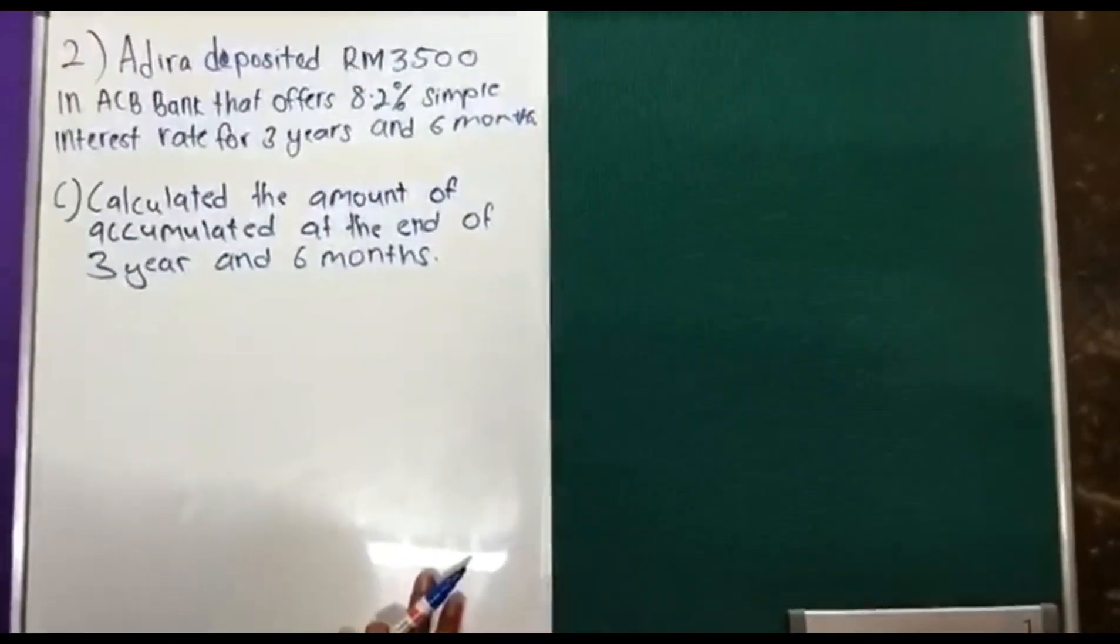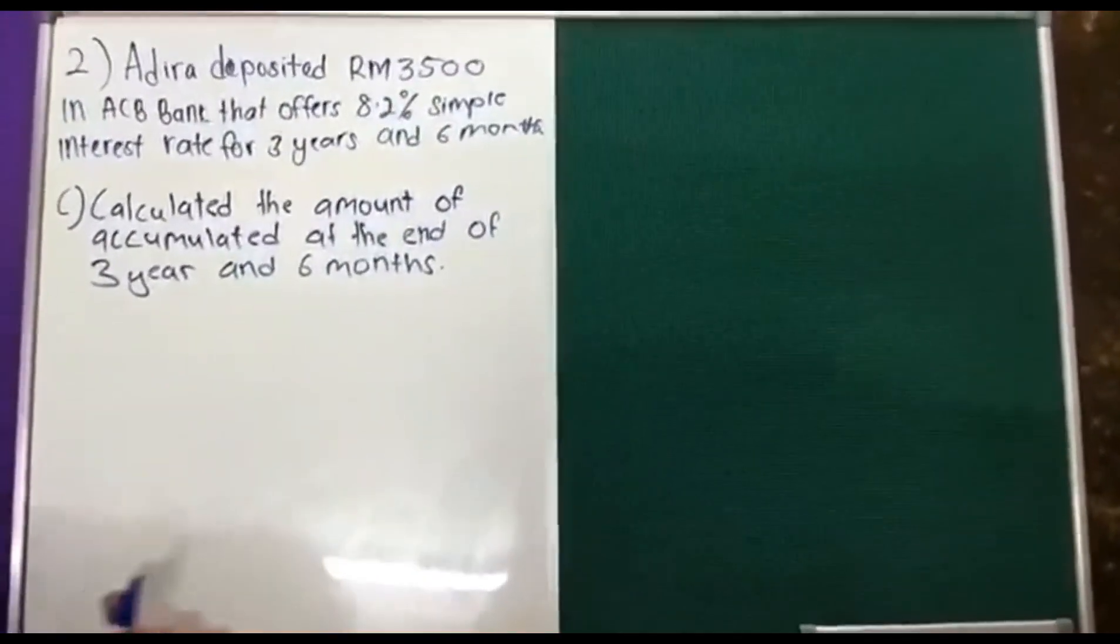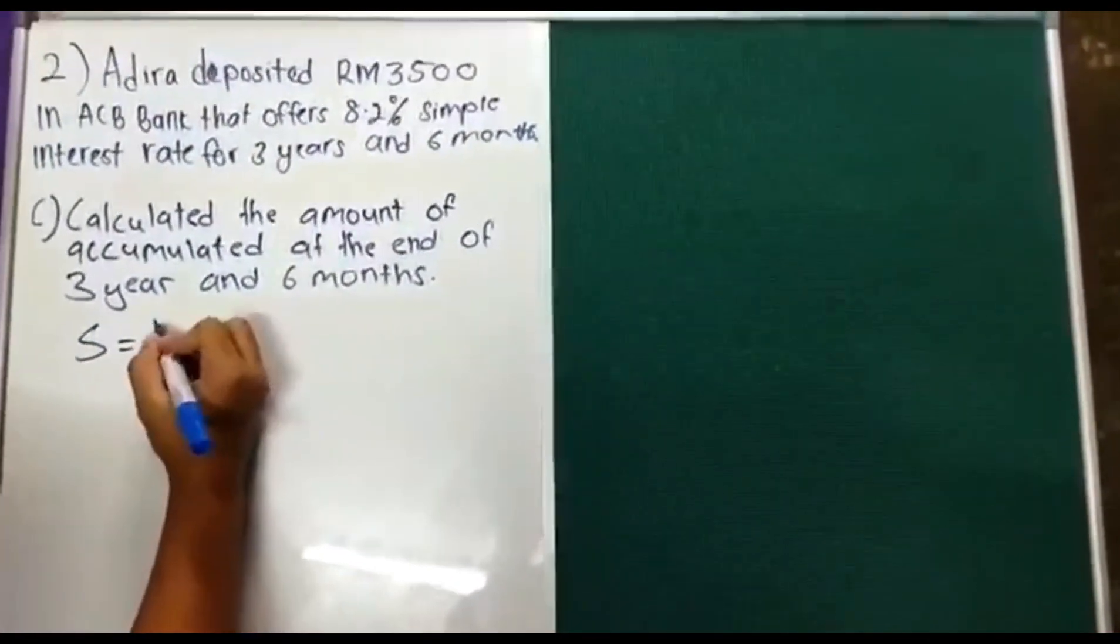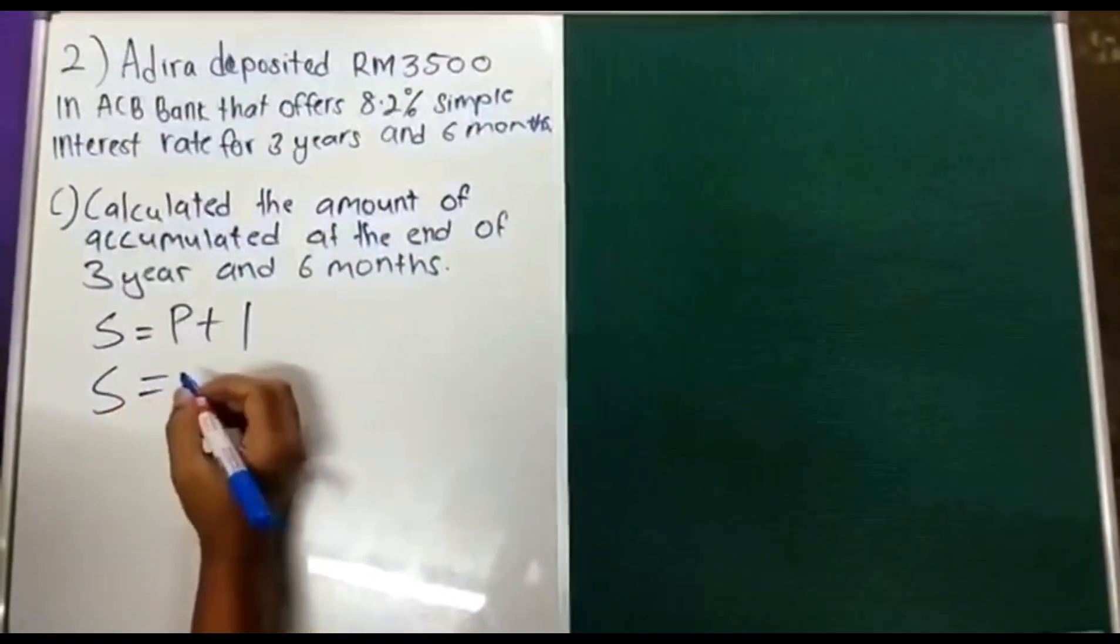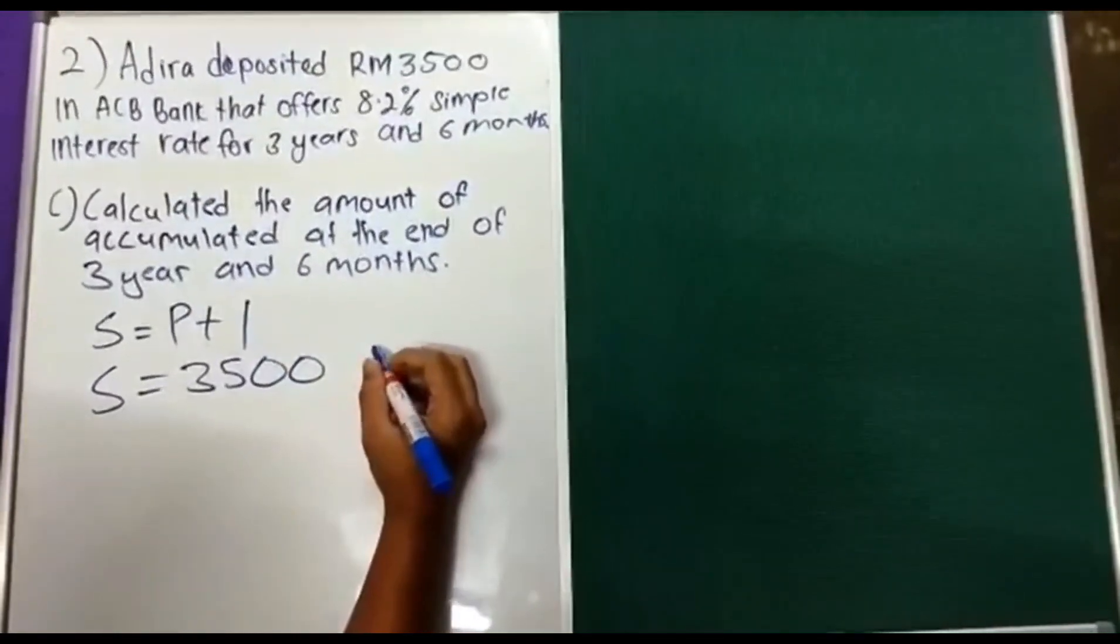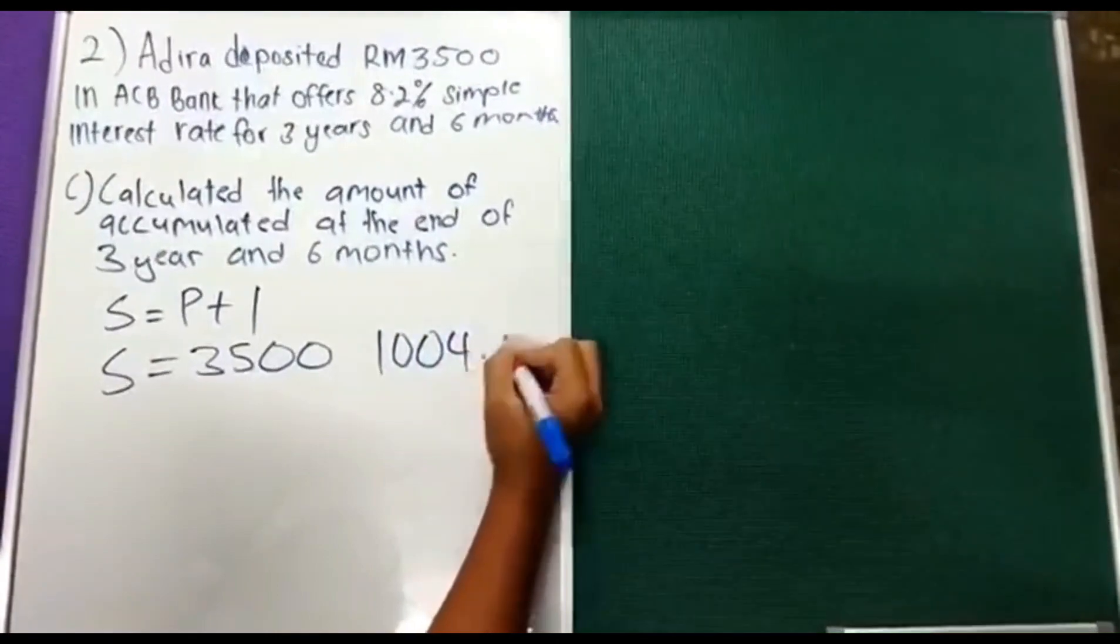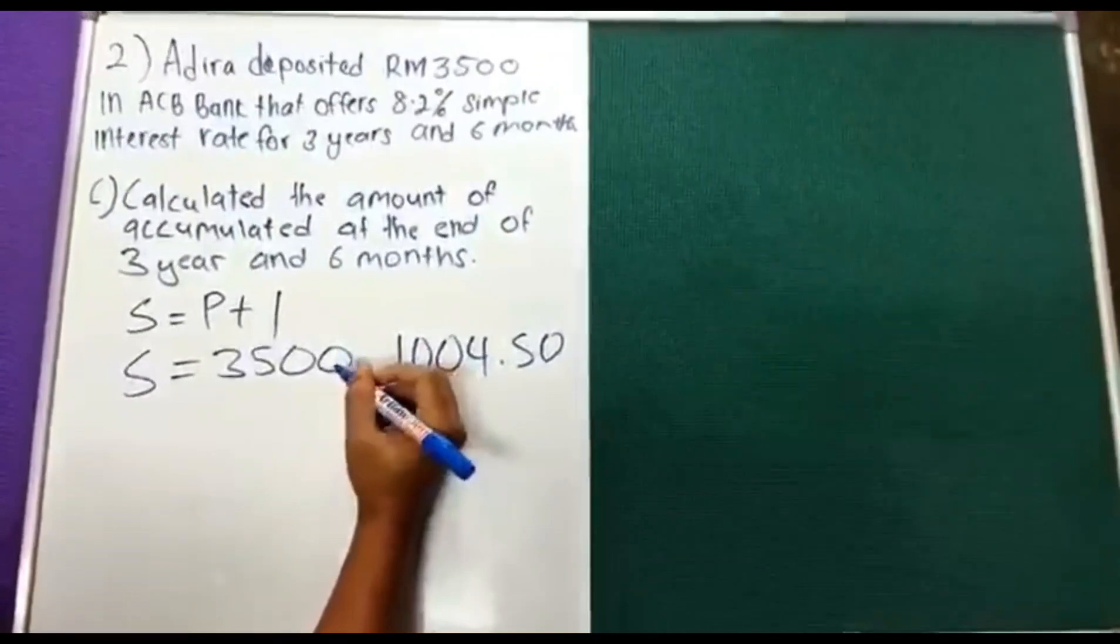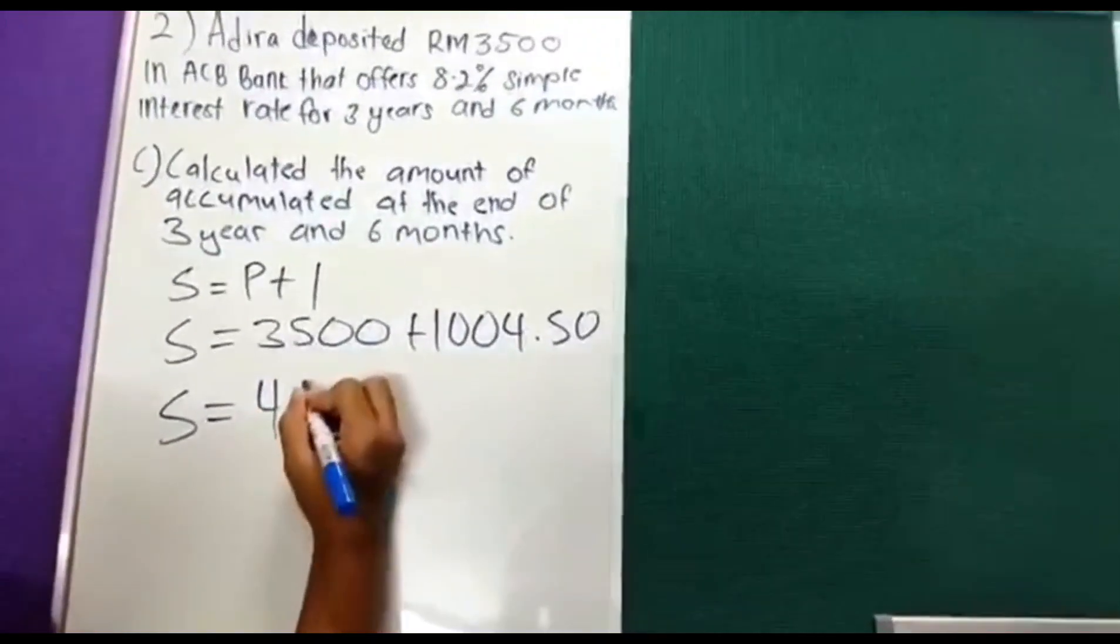Question C is calculate the amount accumulated at the end of 3 years and 6 months. The formula is S equals P plus I. Value of P is 3500, value of I is 1004.15. The answer is RM4,504.50.